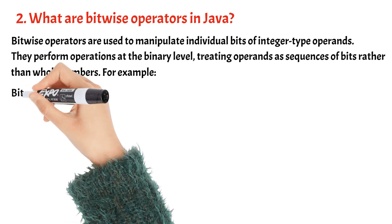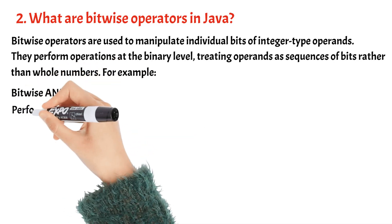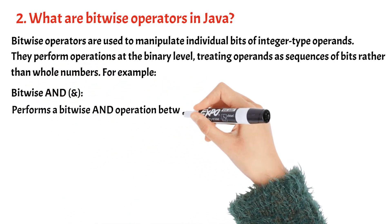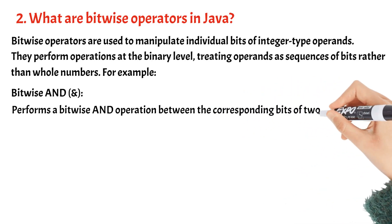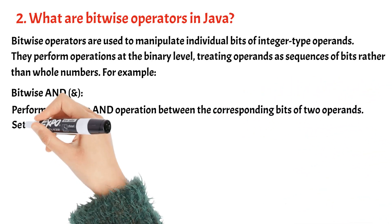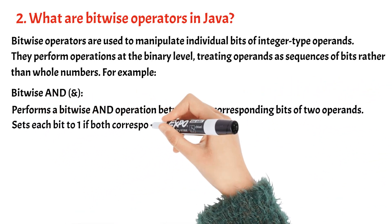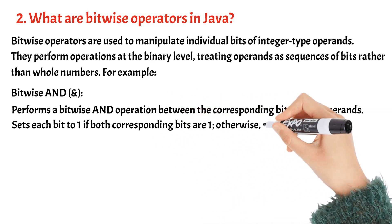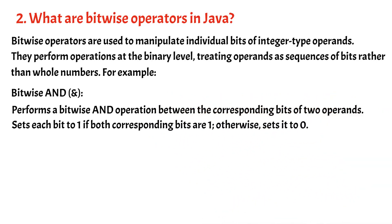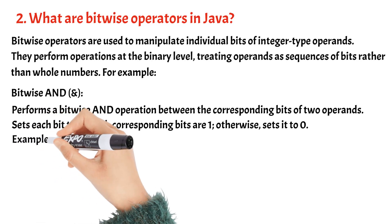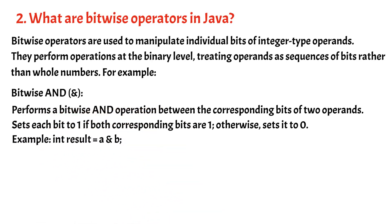For example, bitwise and (&) performs a bitwise and operation between the corresponding bits of two operands. Sets each bit to 1 if both corresponding bits are 1, otherwise sets it to 0. Example: int result = a & b.